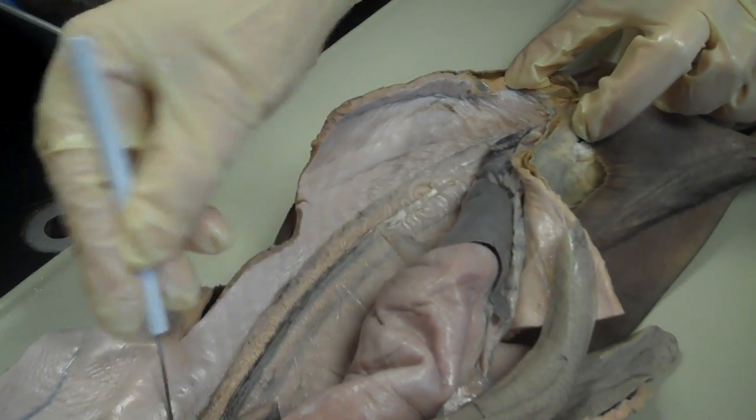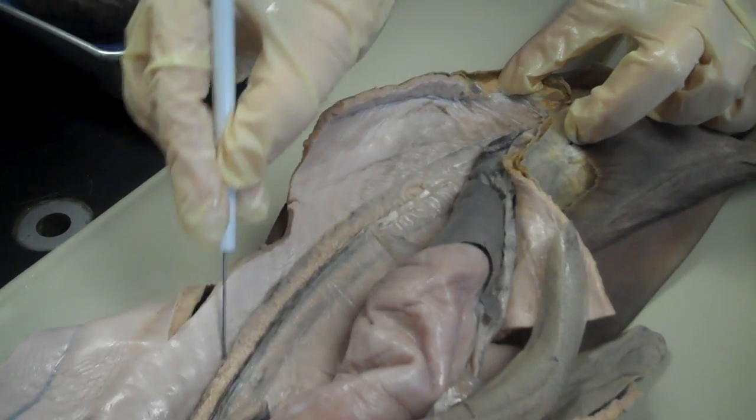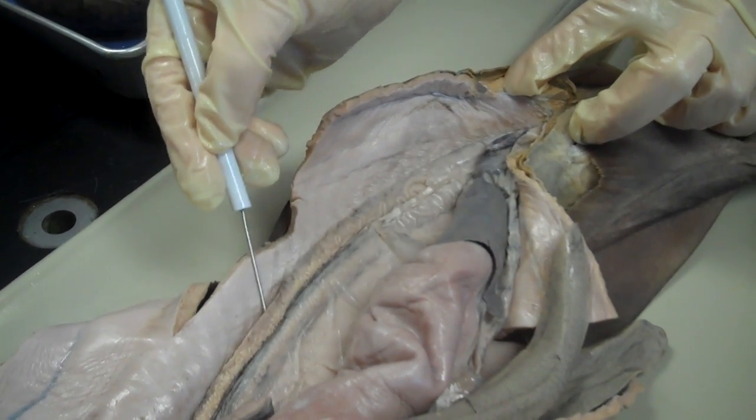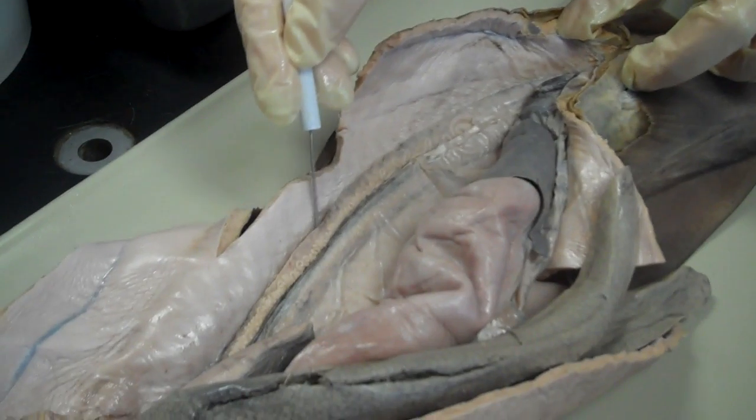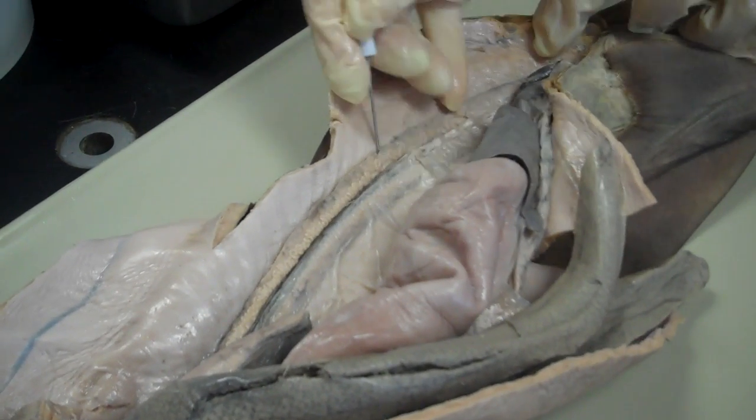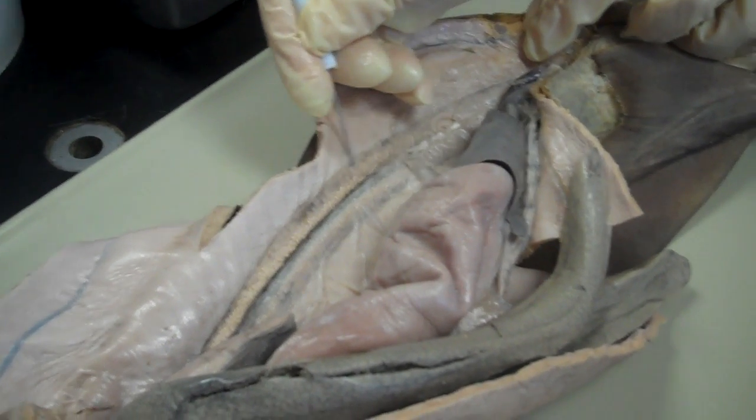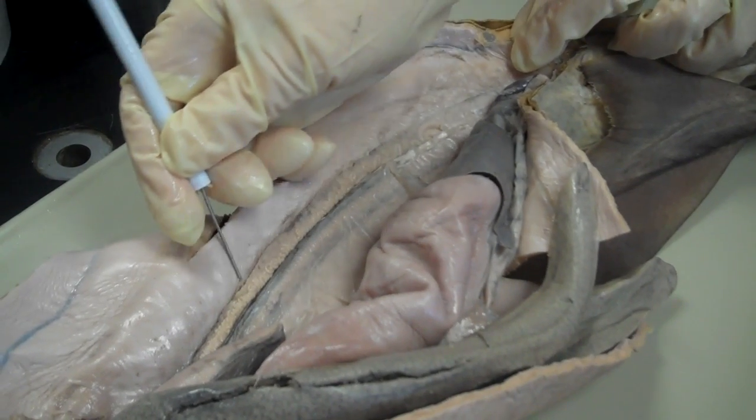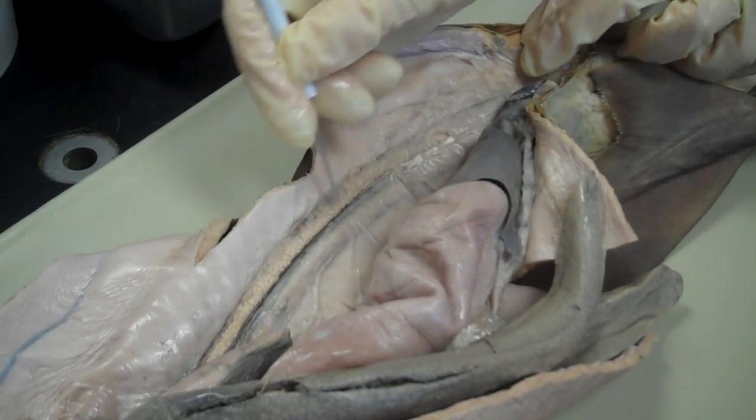Now all of those structures, the vas deferens and the seminal vesicles, all sit right on top of this flap of tissue. This is the kidney that is retroperitoneal. It's buried in the peritoneum in the dorsal body wall. So this is all kidney with the vas deferens on top.